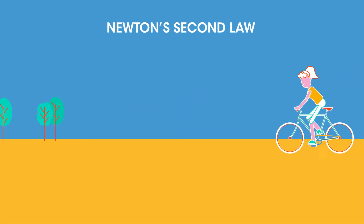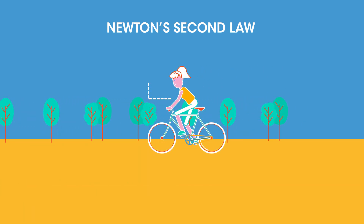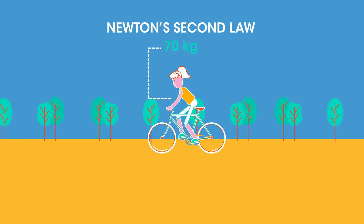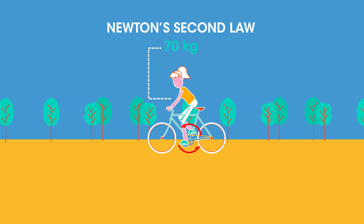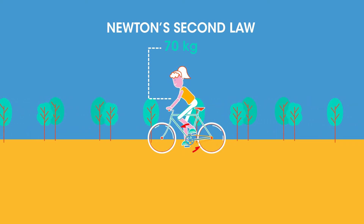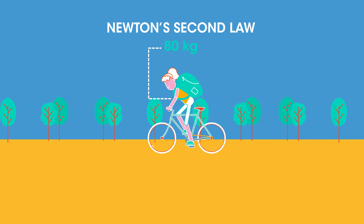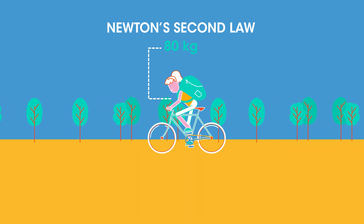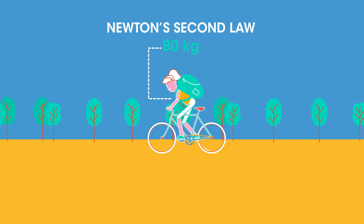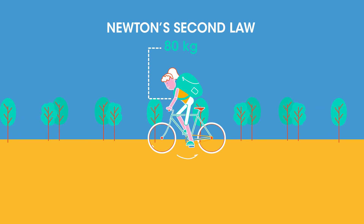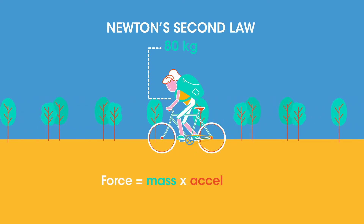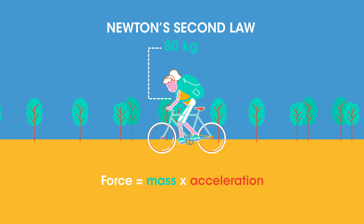Newton's second law states that the acceleration of an object depends on the mass of the object and the force applied. So for our cyclist, the heavier she and the bike are, and the quicker she wants to accelerate, the harder she has to push. This can be summarized in the equation: force equals mass times acceleration, or F equals m times a.